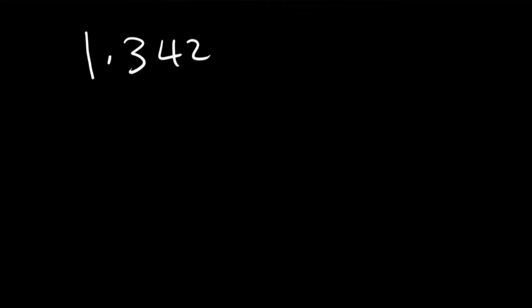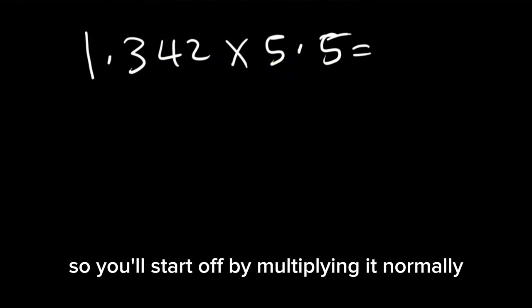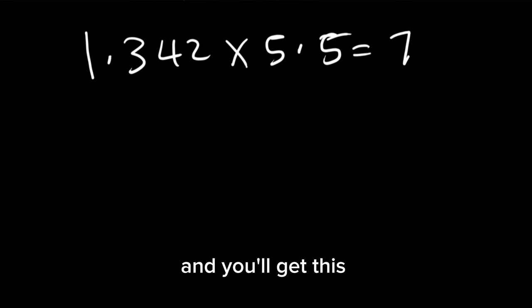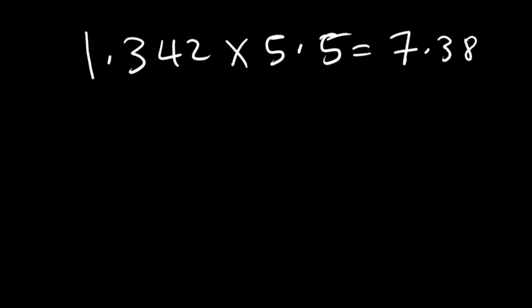Welcome back. In this video we are going to multiply and divide significant figures. So let's say you have 1.342 times 5.5. You'll start off by multiplying it normally just like any other number and you'll get 7.381.